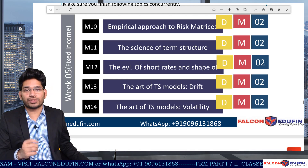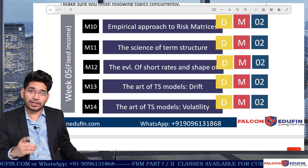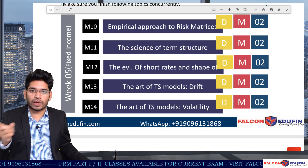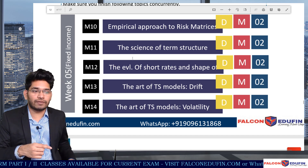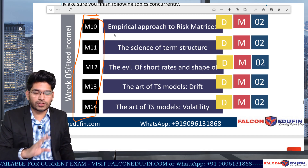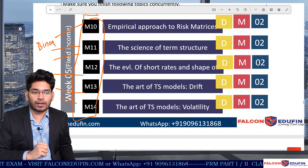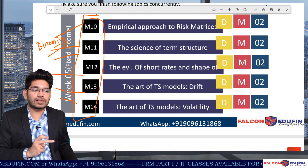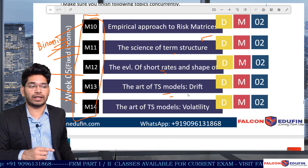Then we have the term structure portion, which is the fixed income section from Tuckman. In FRM Part 1 VaR, you covered Tuckman's first five chapters on price, spread, one-factor risk metrics, and multi-factor risk metrics. The FRM Part 2 term structure topics are the next five chapters in Tuckman's book right after those. Make sure you revise the binomial portion from your Part 1 VaR, as there are a lot of binomial tree concepts in the evolution of the short rate, drift, and volatility models.